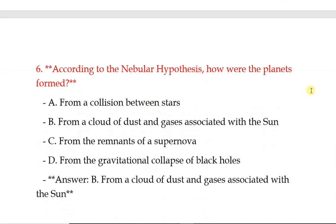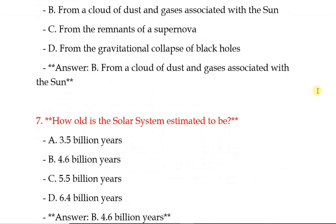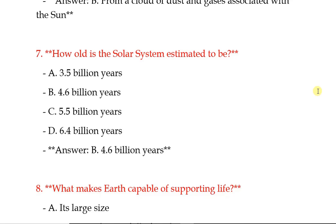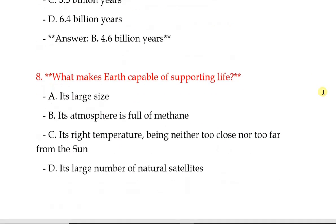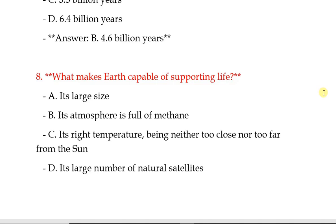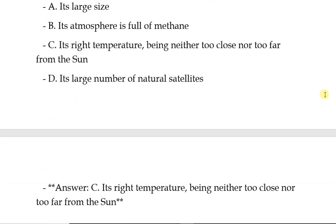According to the nebula hypothesis, how are the planets formed? From a cloud of dust and gases associated with the sun. How old is the solar system estimated to be? 4.6 billion years. What makes Earth capable of supporting life? Its right temperature — being neither too close nor too far from the sun.